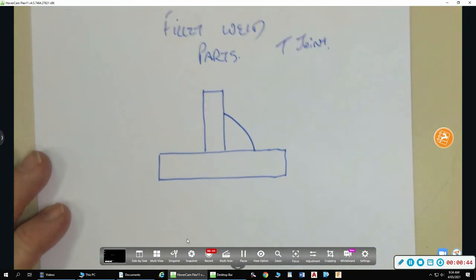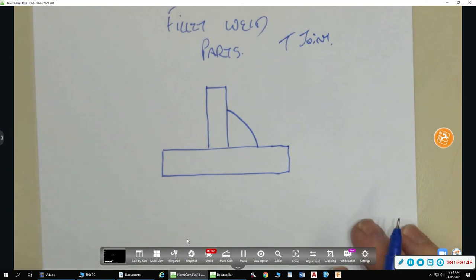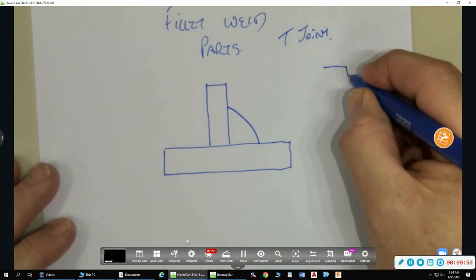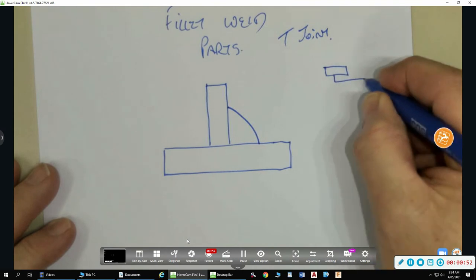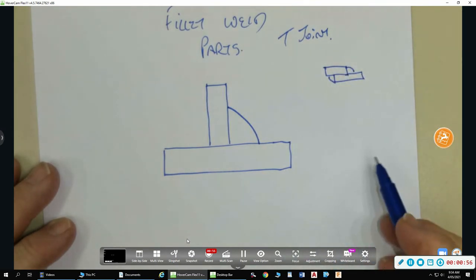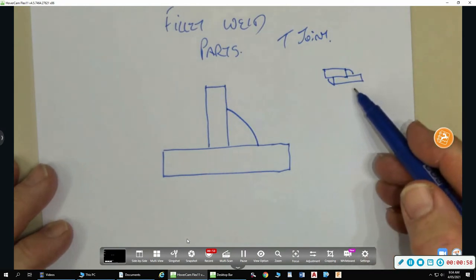So fillet welds aren't always just only on a T joint. We may have a joint like this and a weld there and a weld there. So what type of joint would this one be? Lap joint.